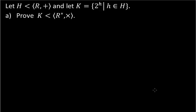The first problem we'll do is number 10 on the handout. H is a subgroup of the additive group of real numbers, and K consists of powers of 2, where the exponents come from that additive subgroup of the real numbers. We want to prove that K is a subgroup of the non-zero real numbers under multiplication.